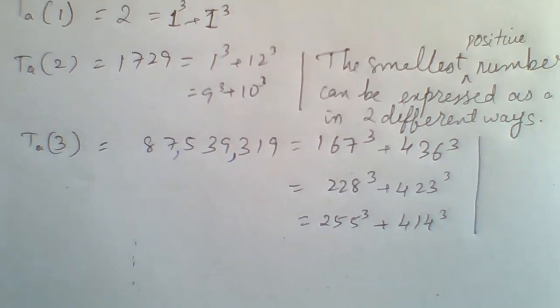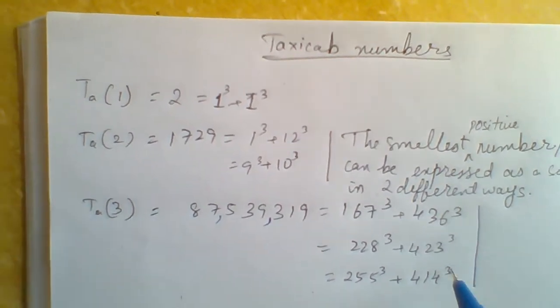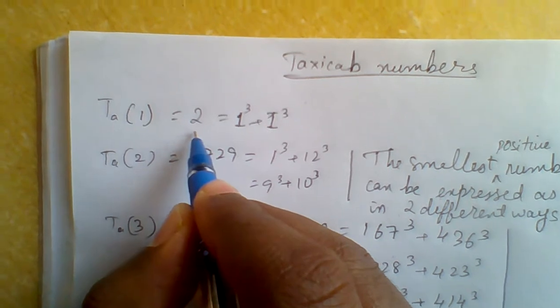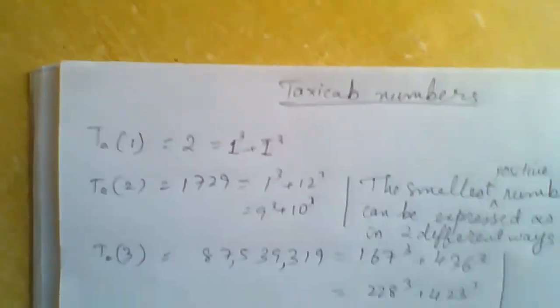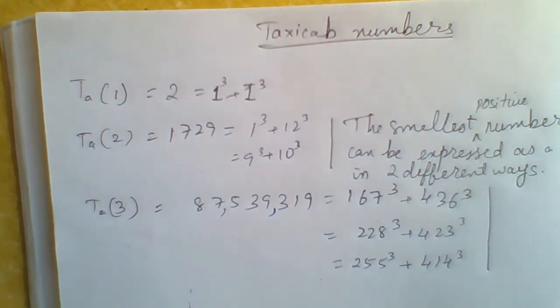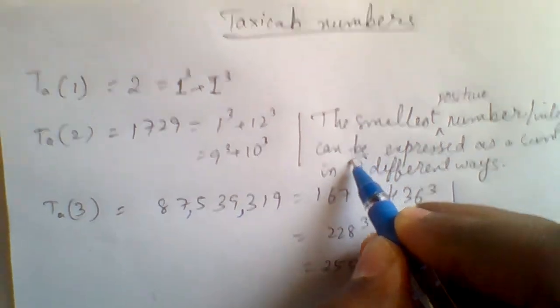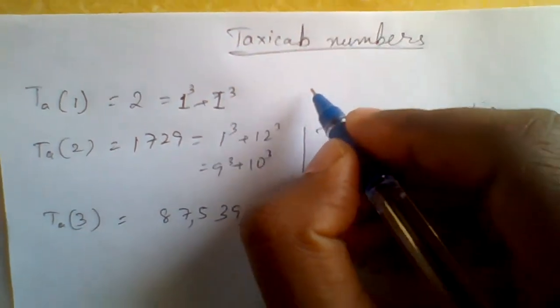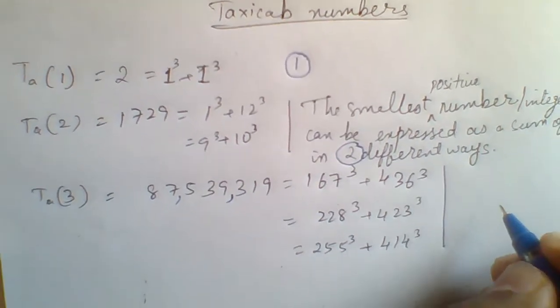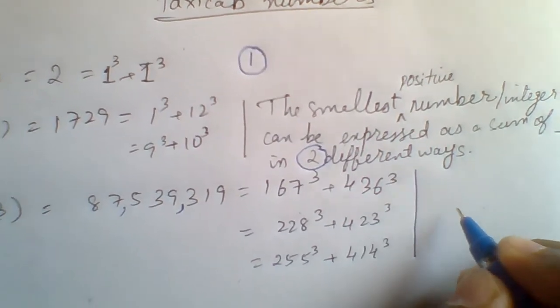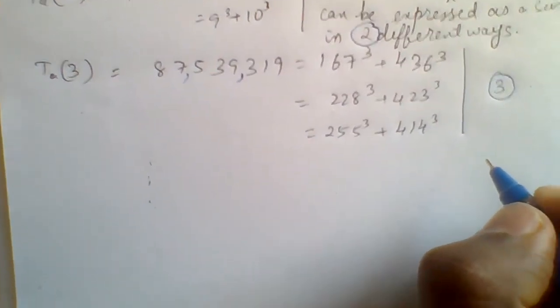There are six known taxicab numbers and the first three of them are here. The first taxicab number is 1³ + 1³ that is 2. The taxicab number two involves two cubes in two different ways, the taxicab number one will involve one different way, and the taxicab number three will involve three different ways.